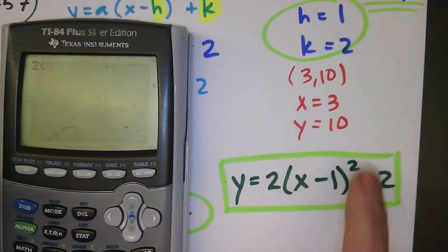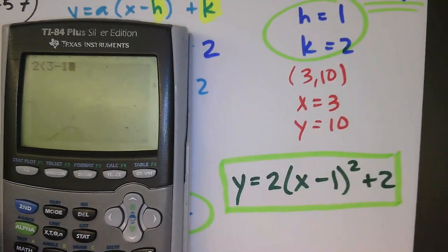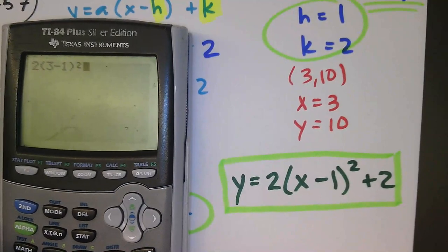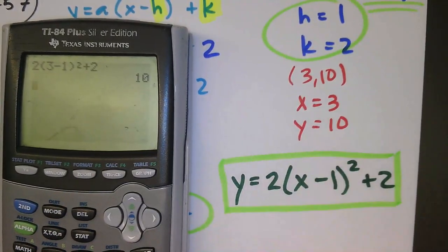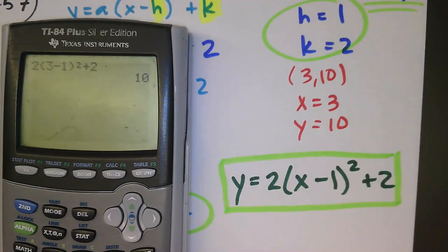If I plug in 3 here for x, I should get 10. So let's clear that. We'll do 3 in for x, so 3 minus 1, quantity squared, plus 2, gives me 10. So it works. The x value of 3 gives me a y value of 10. And message me anytime with questions. Thank you.